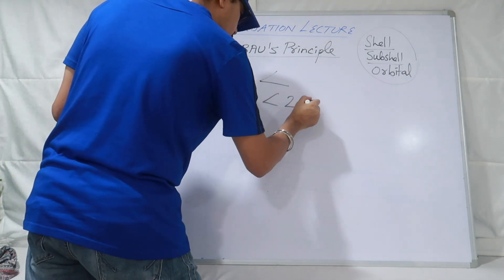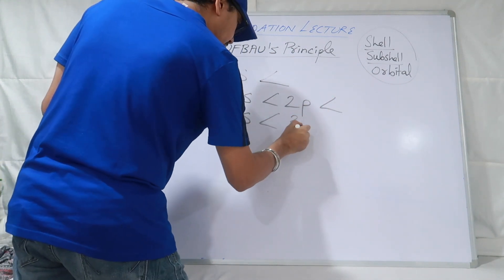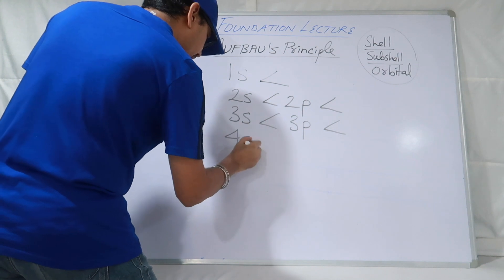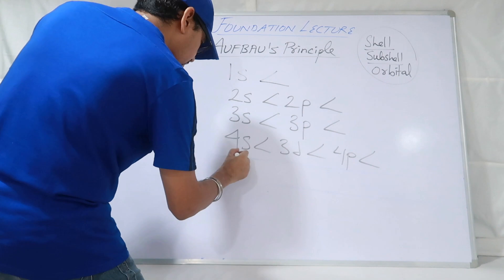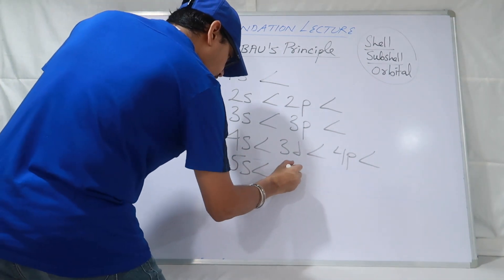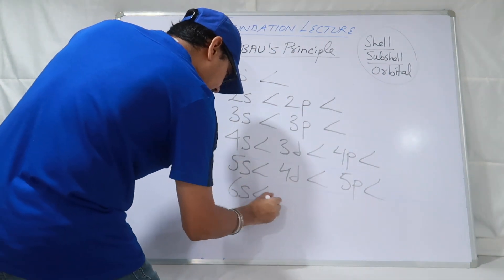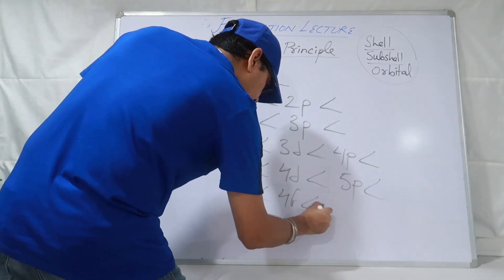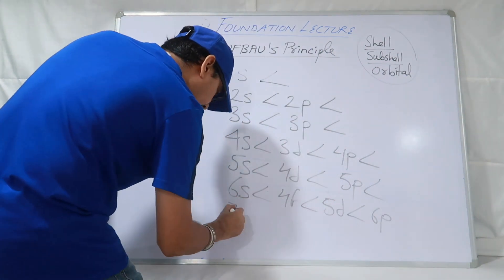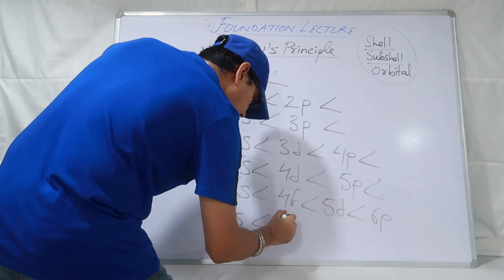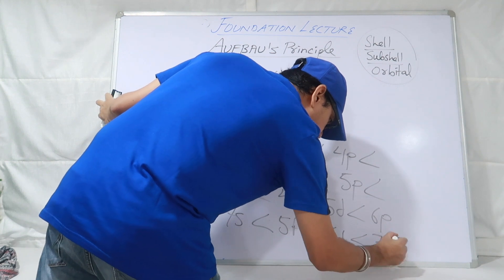The Aufbau energy sequence is: 1s < 2s < 2p < 3s < 3p < 4s < 3d < 4p < 5s < 4d < 5p < 6s < 4f < 5d < 6p < 7s < 5f < 6d < 7p. This is the order in which electrons fill up sub-shells, from lowest to highest energy.